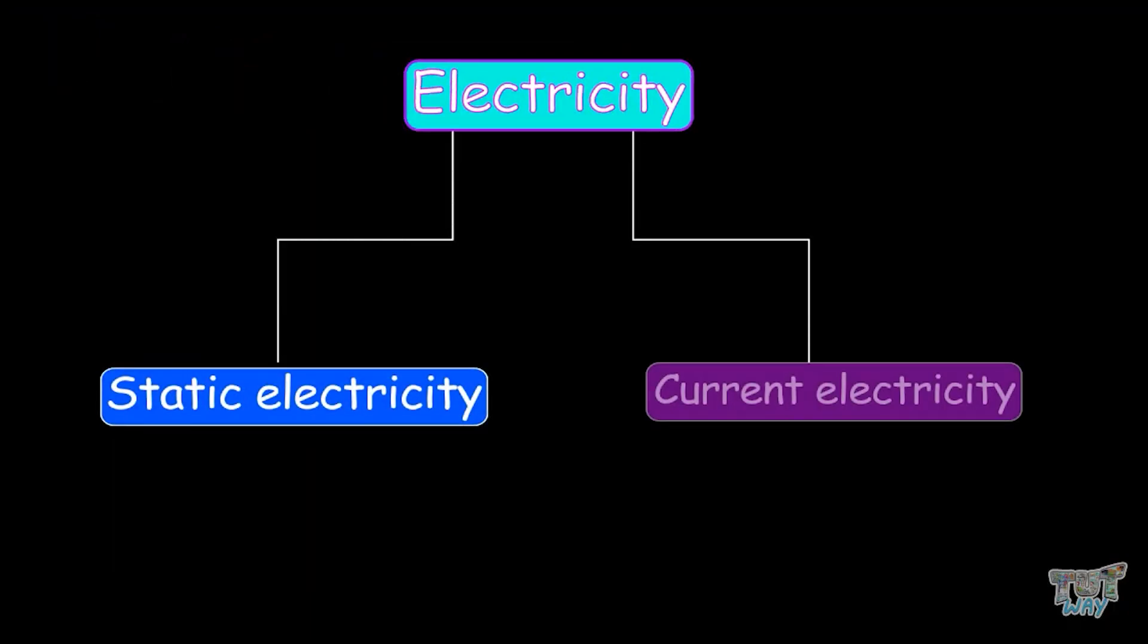So now we know that electricity is of two types, static electricity and current electricity.